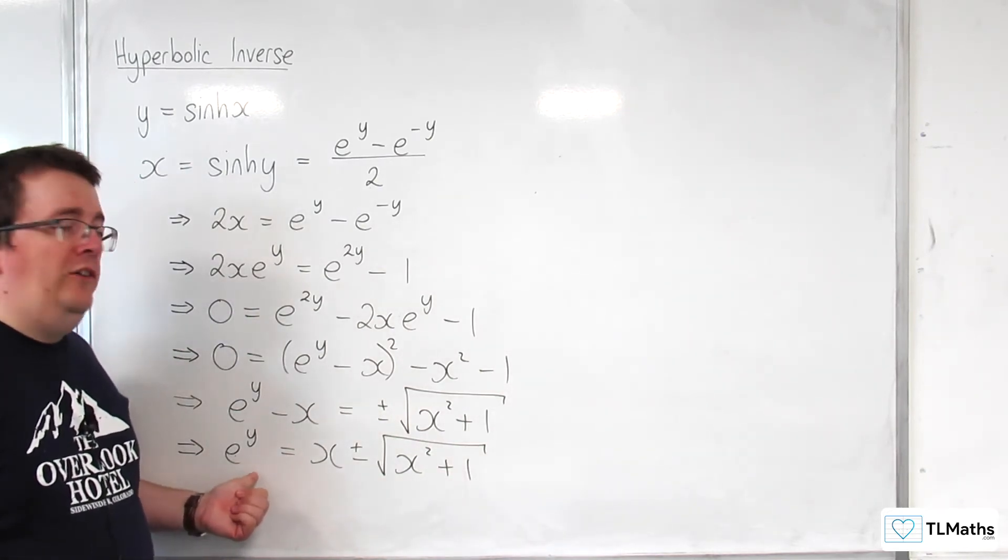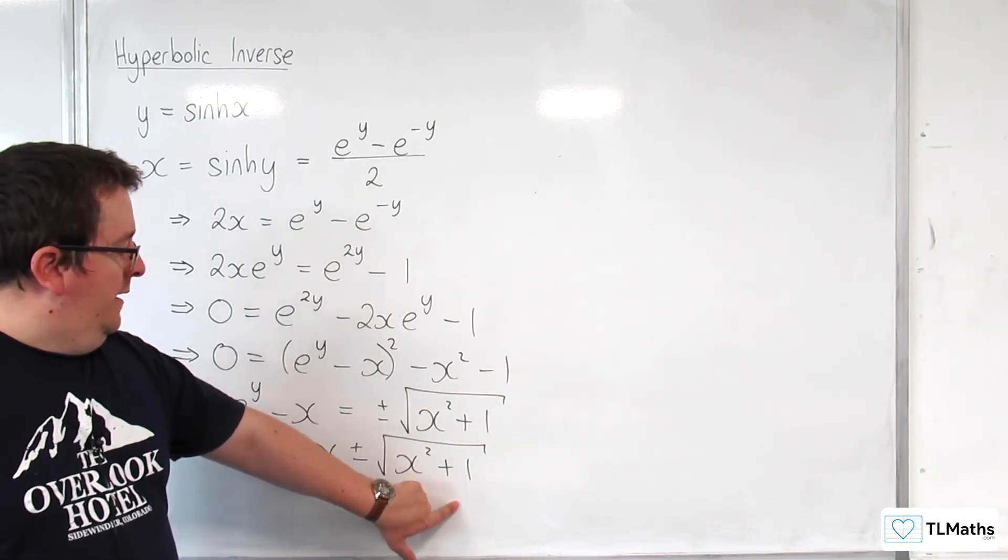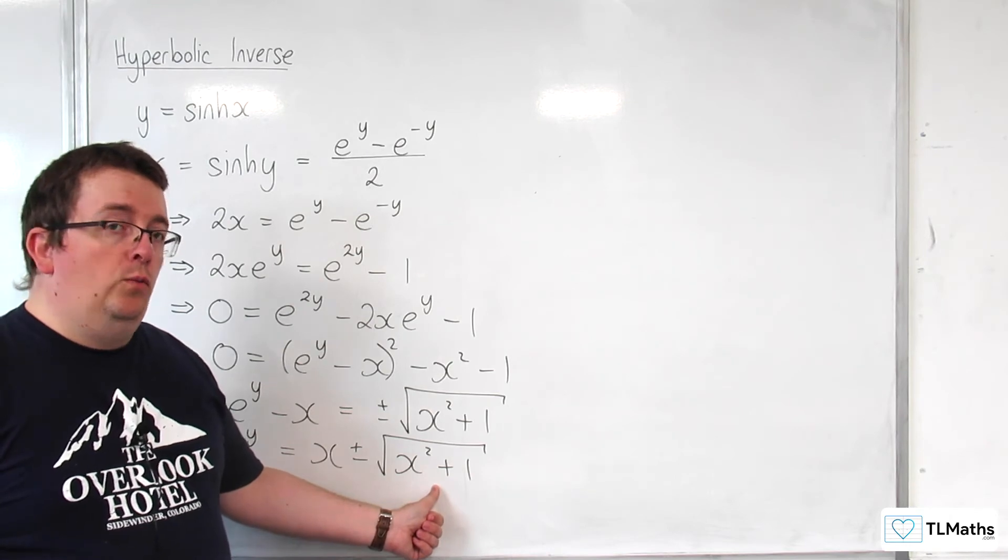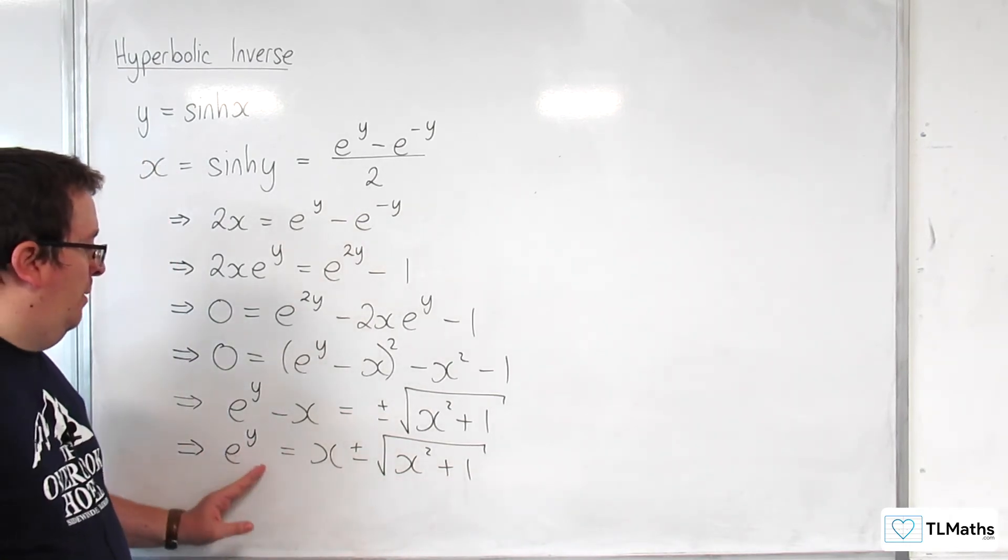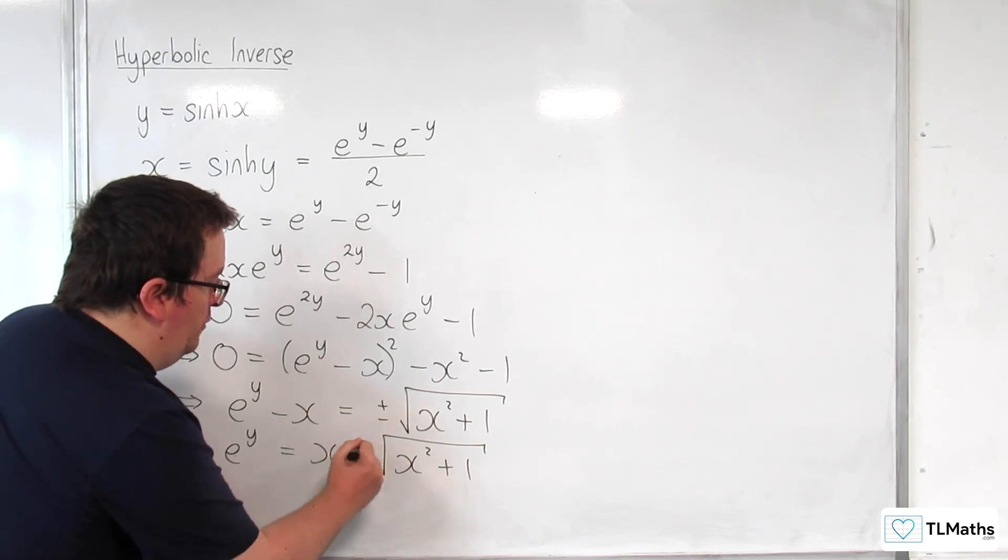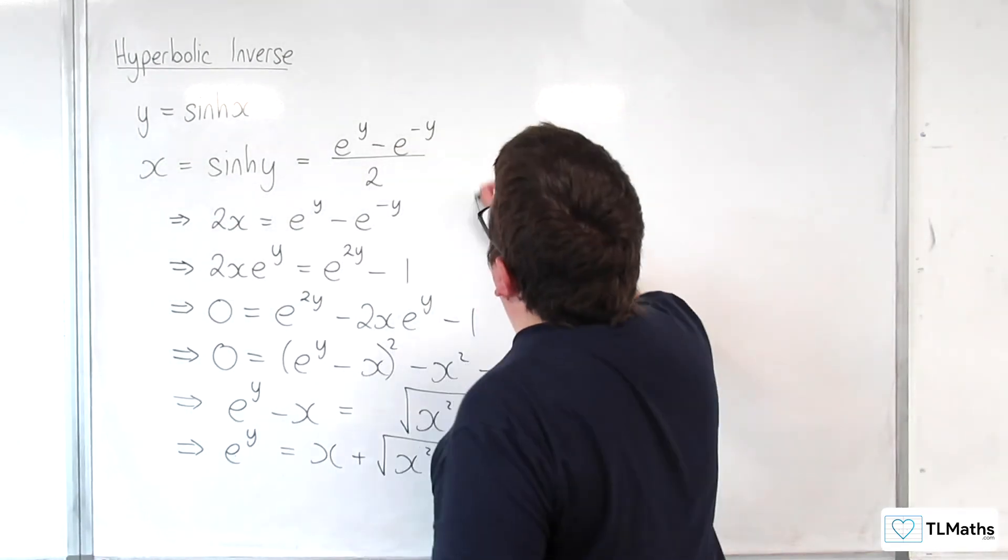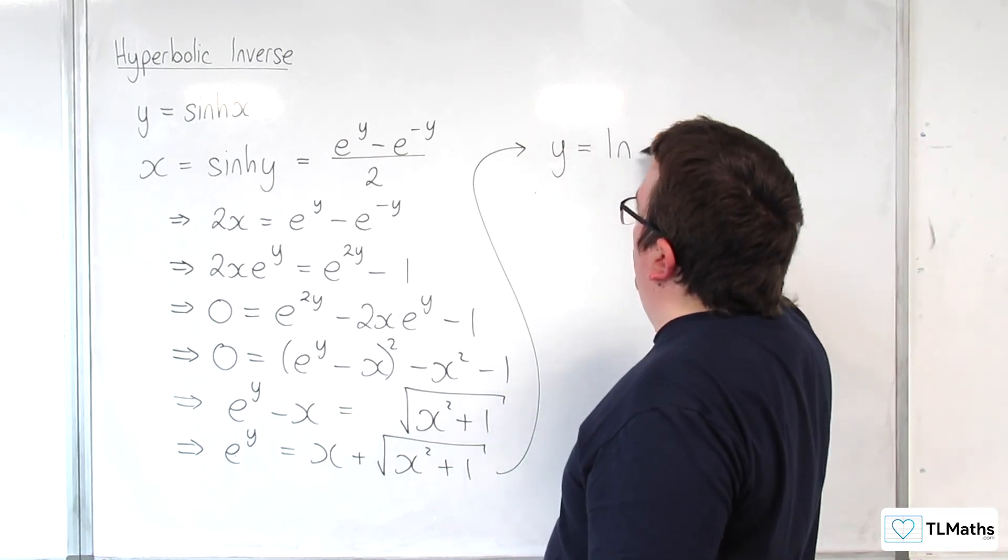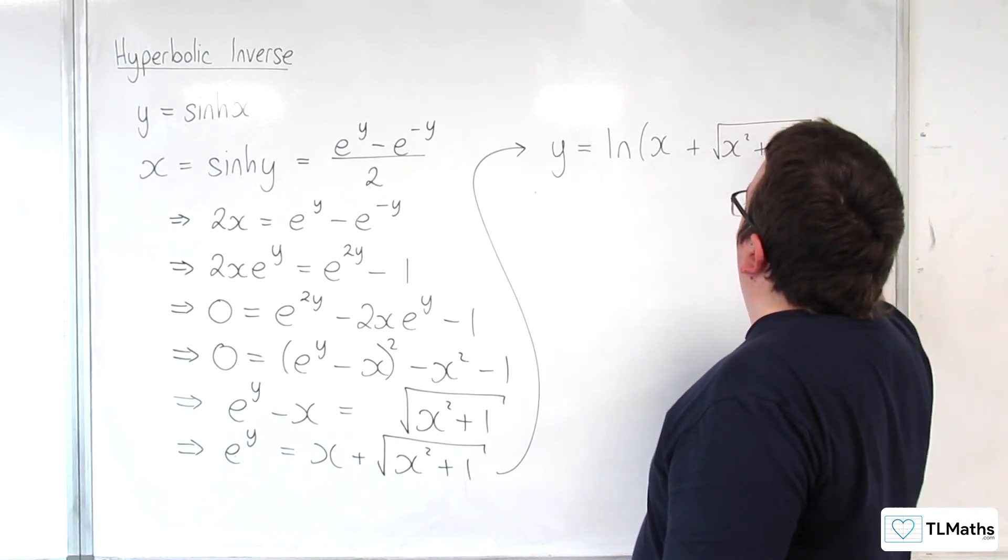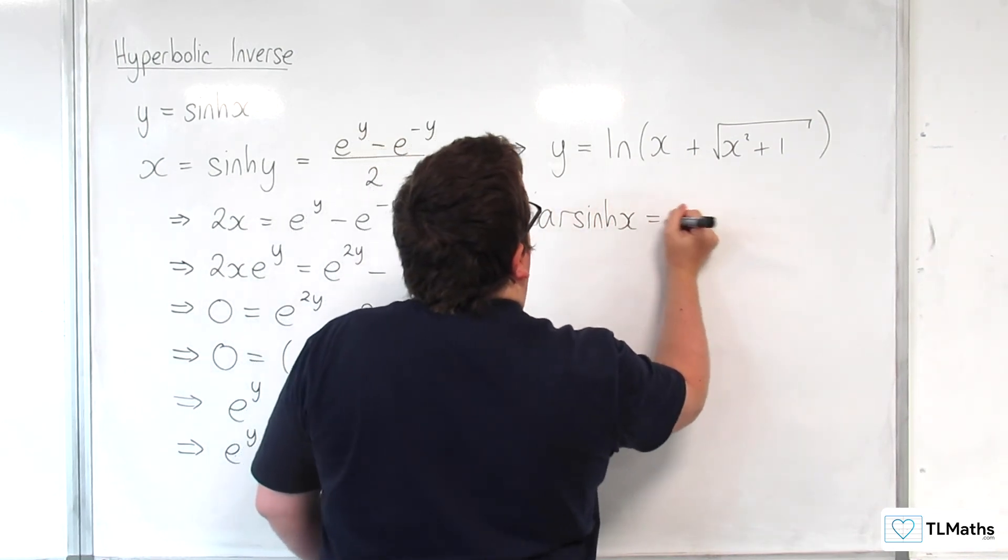Now e to the y is always positive. And the square root of x squared plus 1 will always be larger than x. So x take away the square root of x squared plus 1 will always be negative. So we can't have something that's always positive being negative. And so we don't have that take away, we can remove it. And so actually we have this. So we can now log both sides and say that y is equal to the natural log of x plus the square root of x squared plus 1. So arcsinh of x is this.